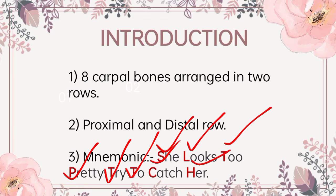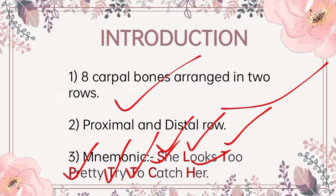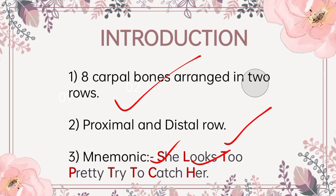Now see T and T — trapezium and trapezoid. In trapezium there is 'I' and in trapezoid it is 'O.' Alphabetically, I comes before O, so remember: first is trapezium, then is trapezoid.